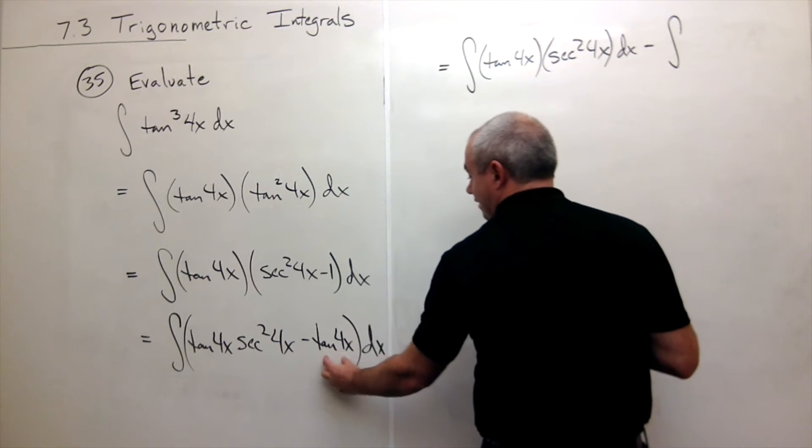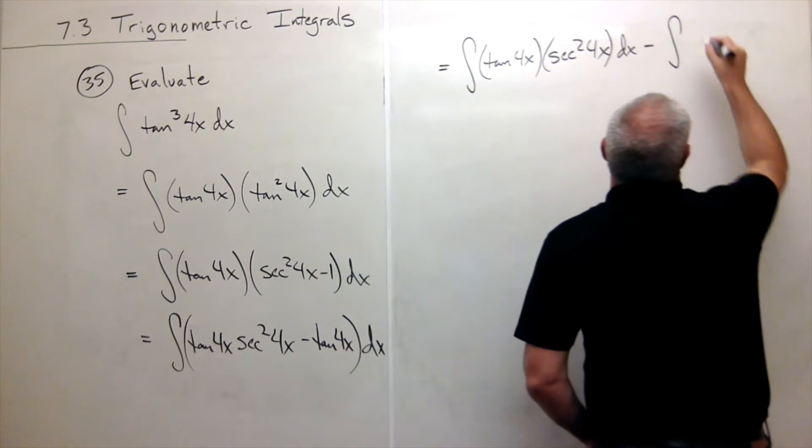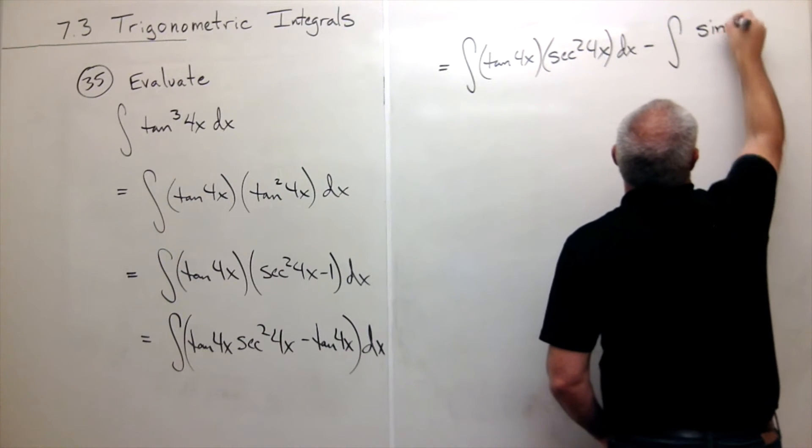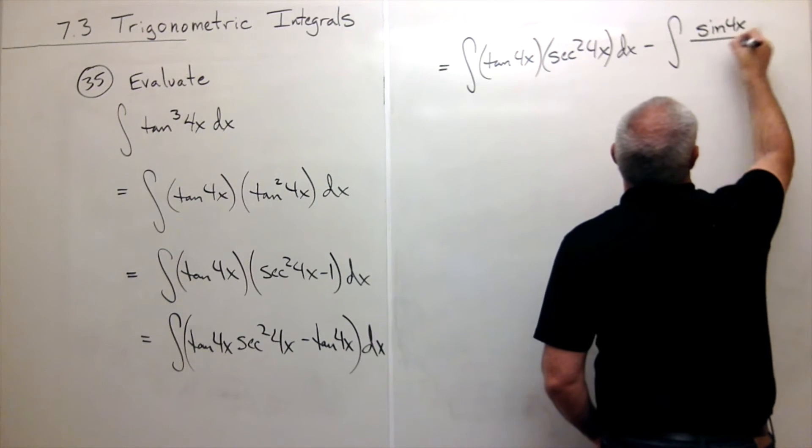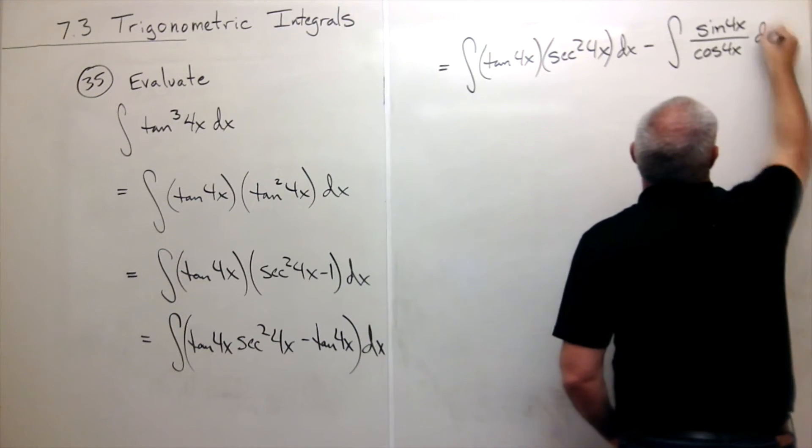tangent of 4x. But I'm going to write tangent of 4x in the following way. I'm going to write that as sine of 4x divided by cosine of 4x dx.